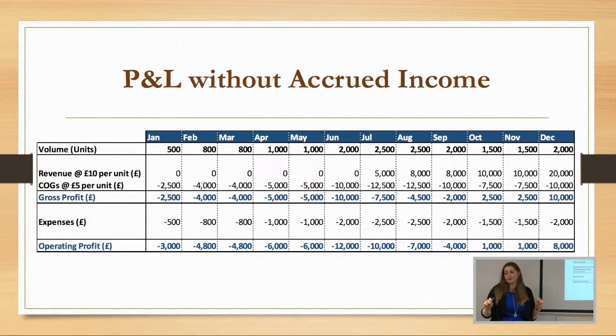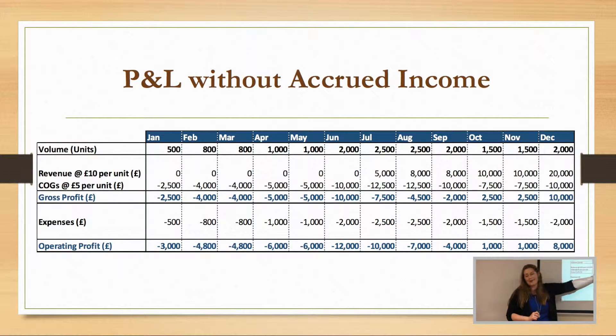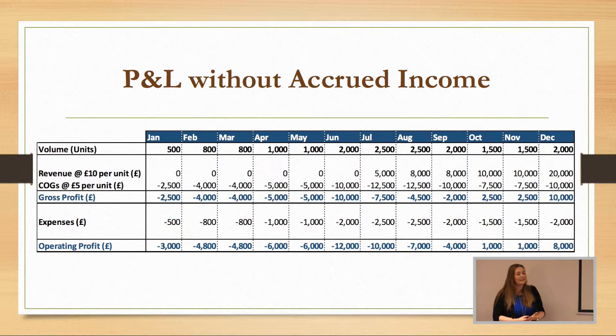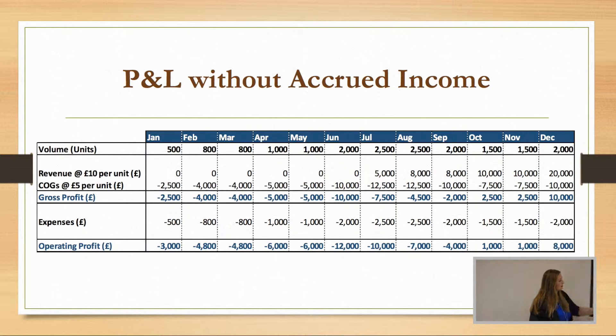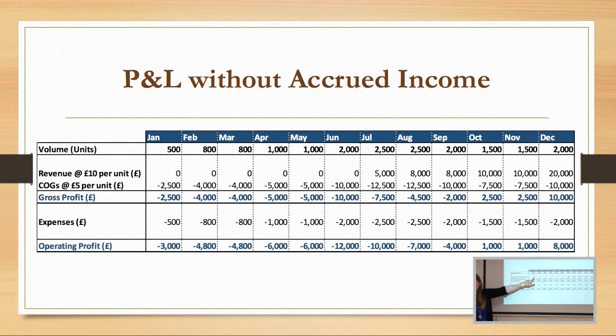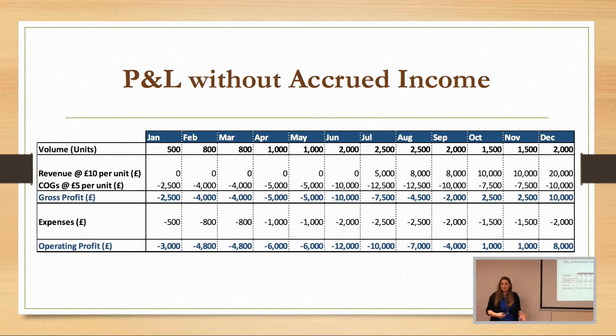Without accrued income — this was a bit tricky for me because I don't really get involved in accrued income; it's not something we often come across at the brewery. I've done this as a new job, new company. They've just started out and they've got absolutely no revenue for the first six months — they haven't raised any invoices. It gets to July and then they start raising their invoices and getting their income. You can see the negative effect here: they've had the cost of goods, they've had to pay out those expenses, but they've not had any income. That's not a true reflection because, obviously, they've been doing jobs and should be getting income.